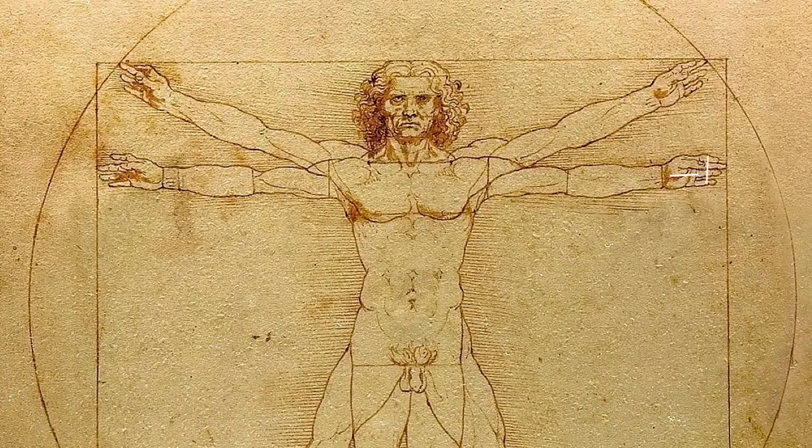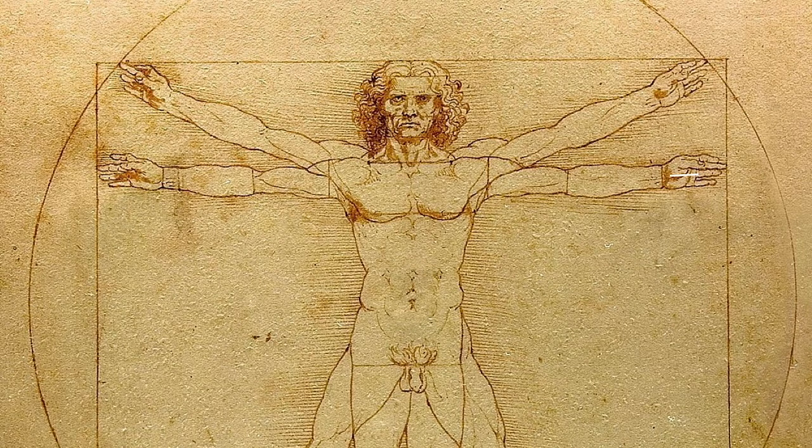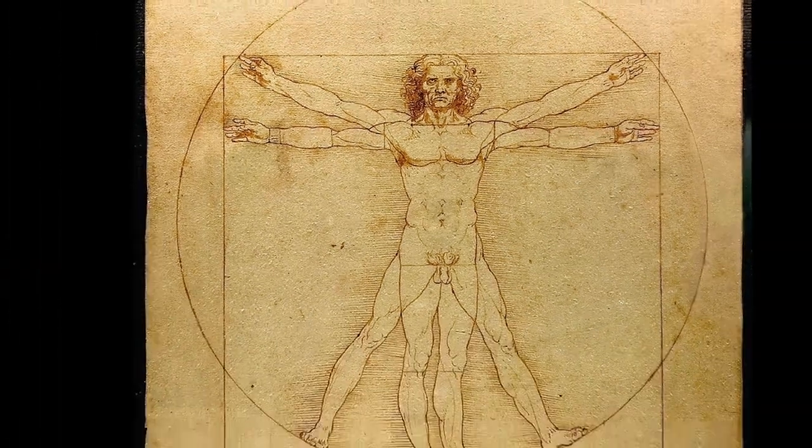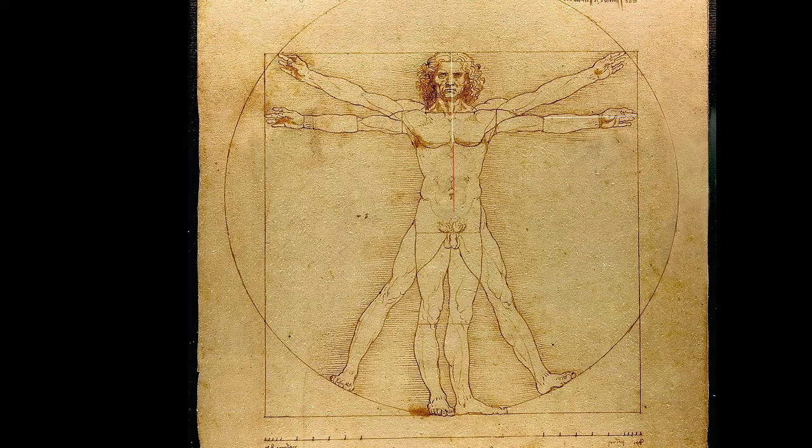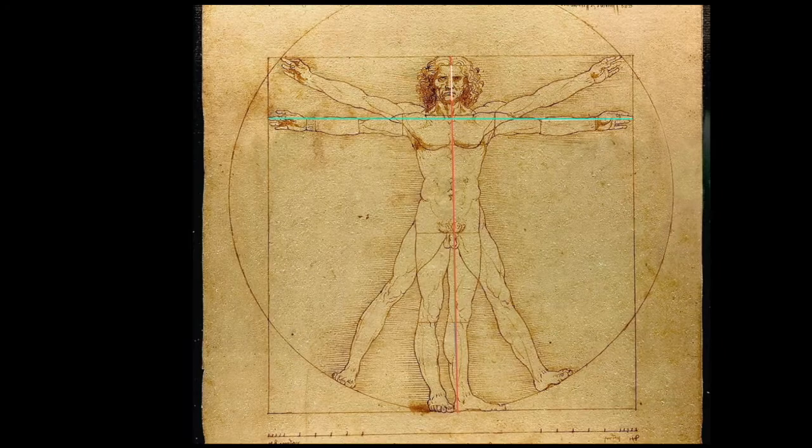The palm is the size of four fingers. The size of the fingertips to the elbows is six times the size of the palms. The length of the open arms is equal to the height of a human. From the hairline to the bottom of the chin, it is equal to one-tenth the height of a human.